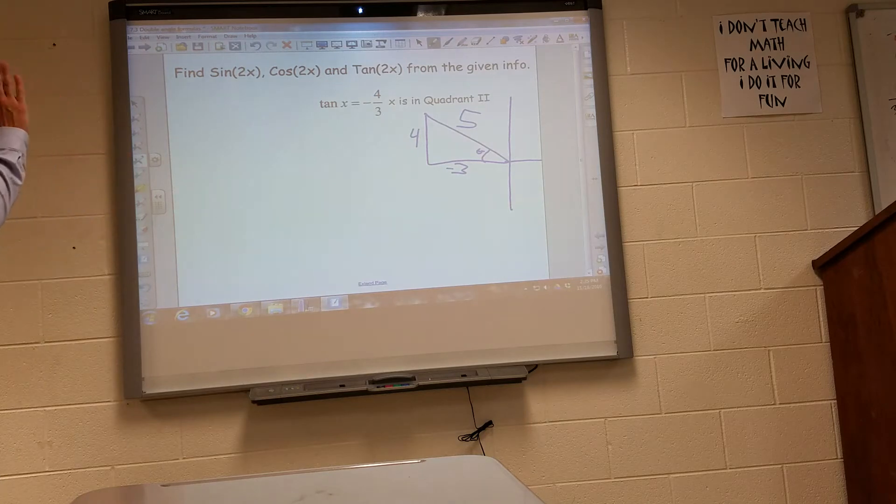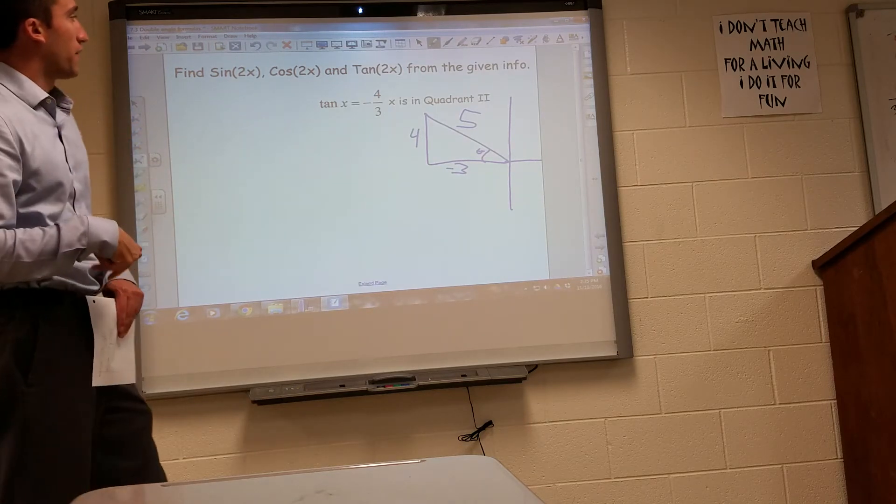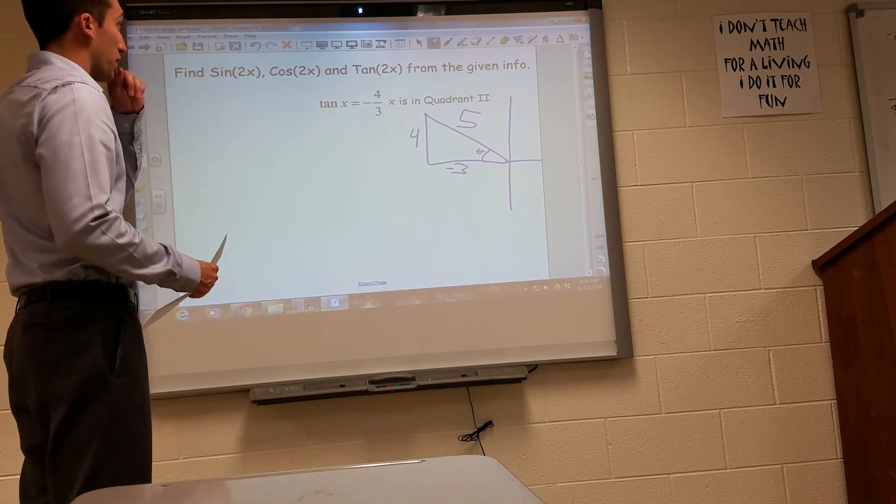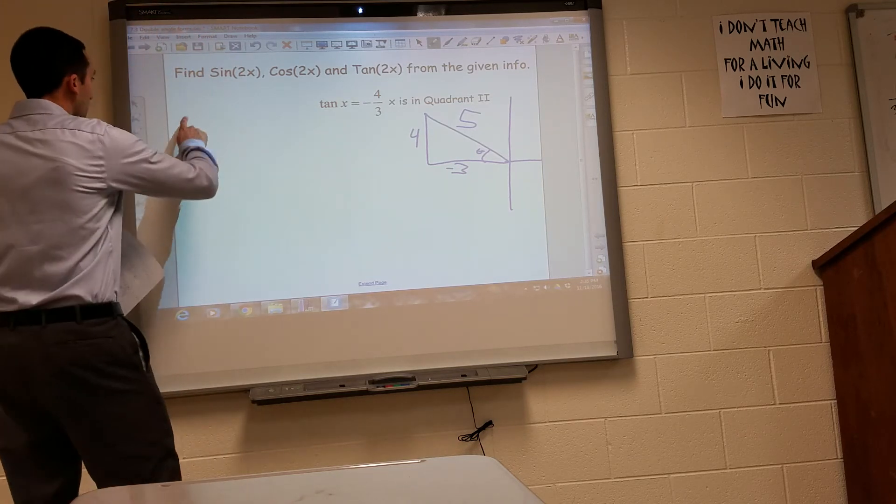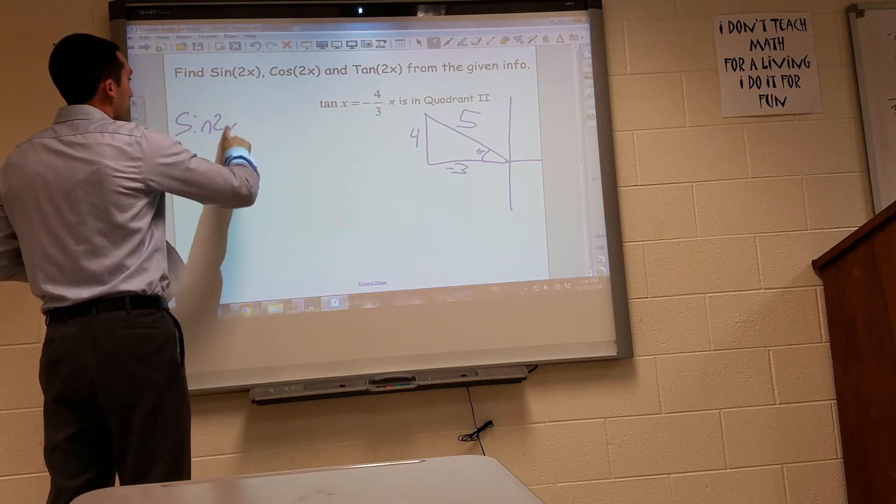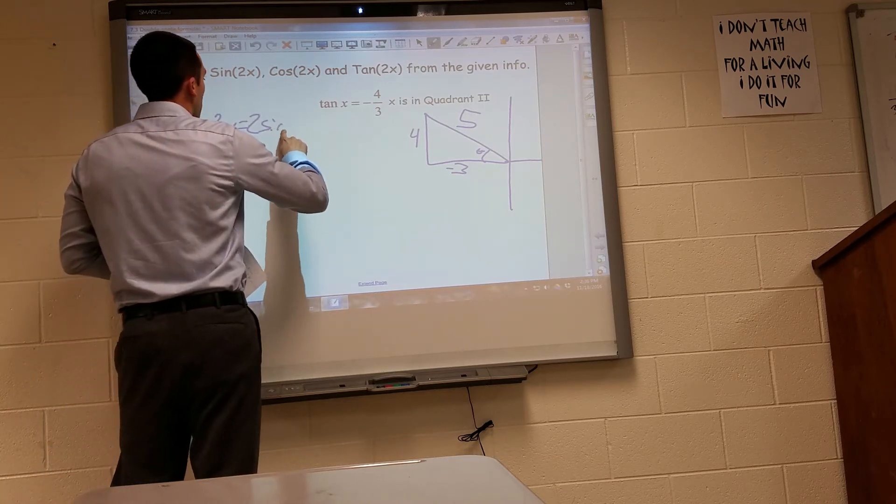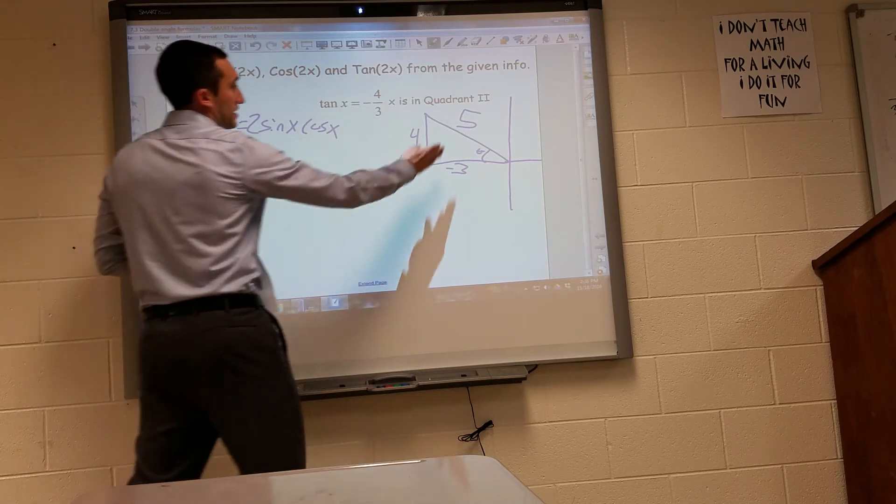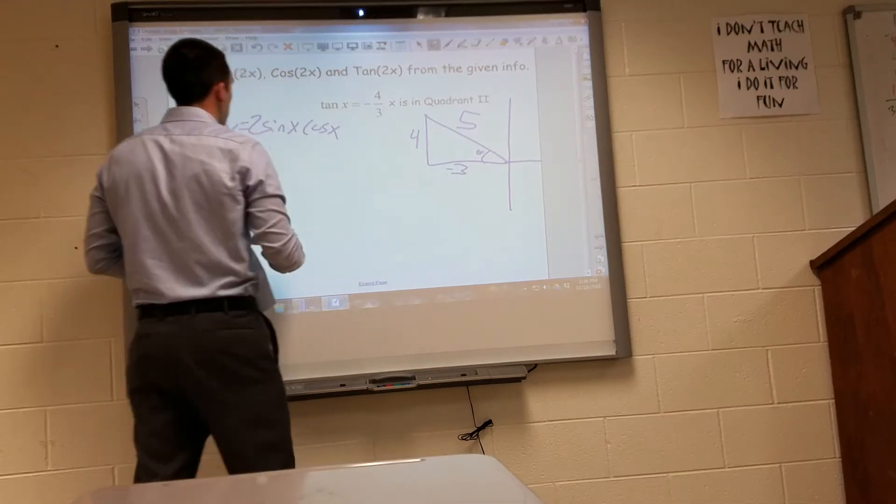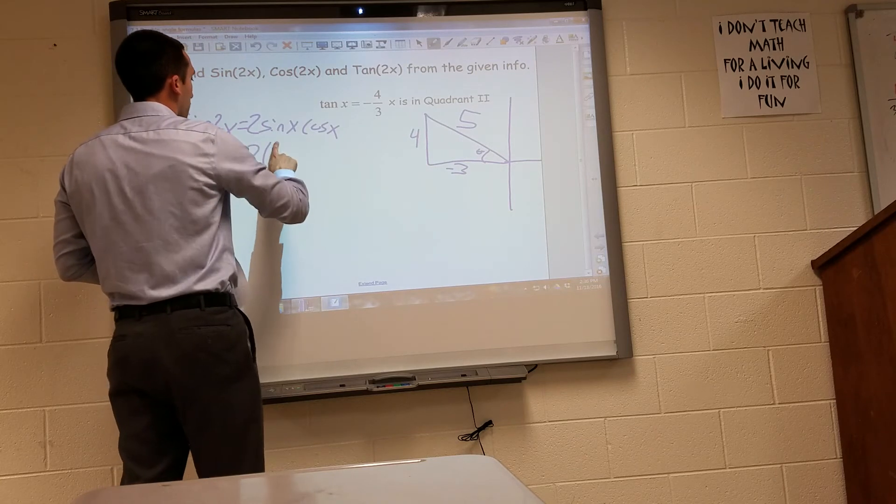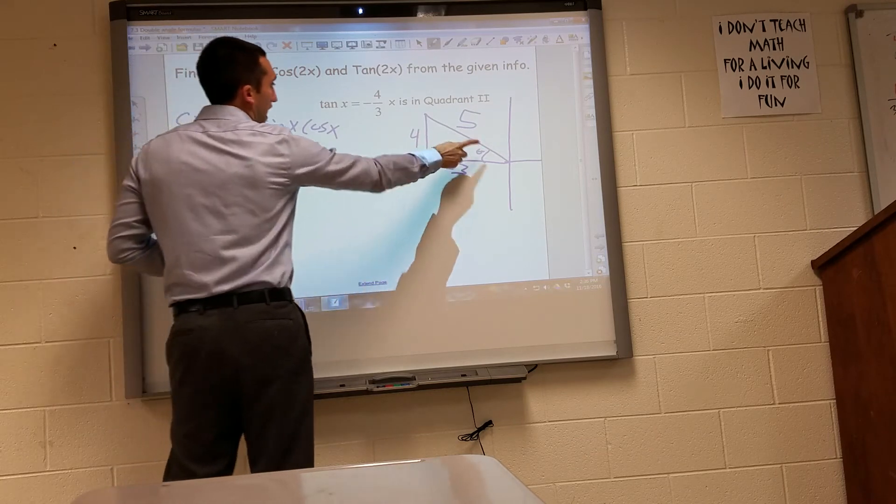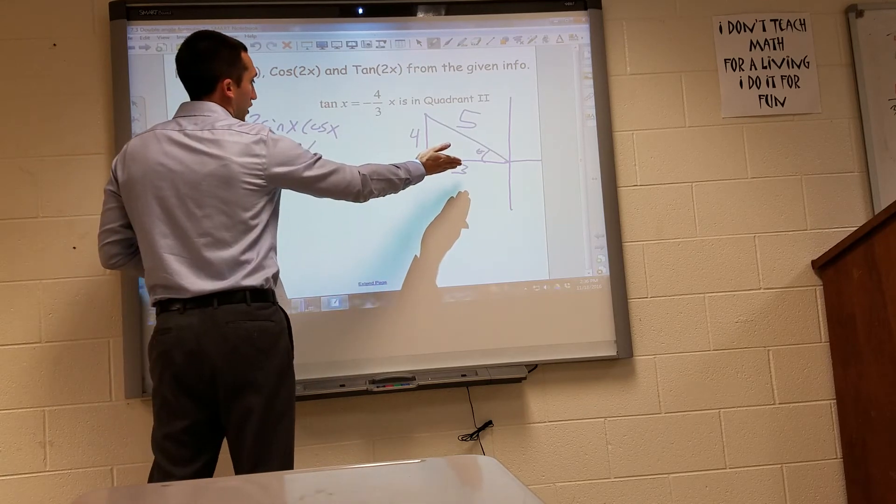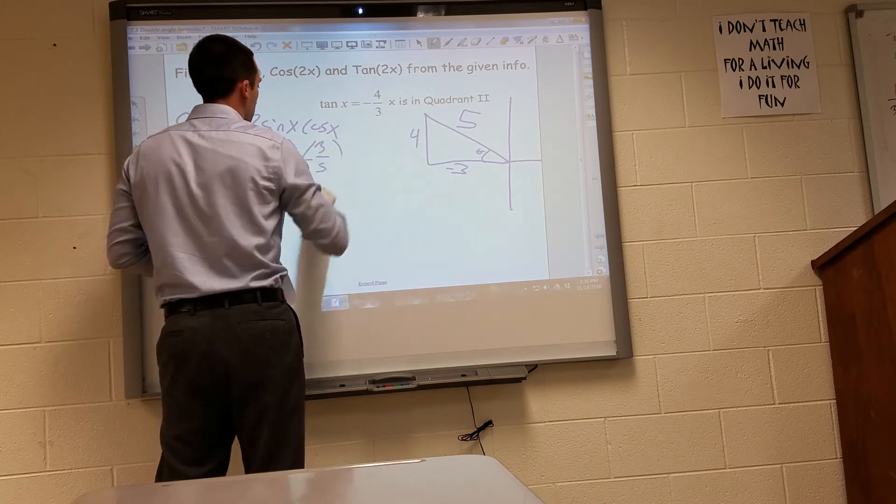So now I can find sine, cosine, and then plug those into the sine and cosine double angle formulas to find these given values. So let's start off with sine 2x is equal to 2 times sine x, cosine x. We know sine x is opposite over hypotenuse, so that's 2 times 4 fifths. Right, the opposite side over the hypotenuse times cosine is adjacent over hypotenuse, negative 3 fifths.